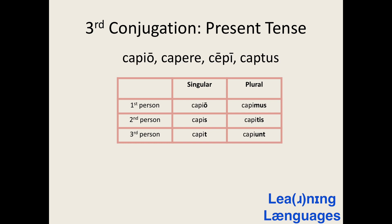Here is how we conjugate the IO variant third conjugation verbs. The example here is capere.